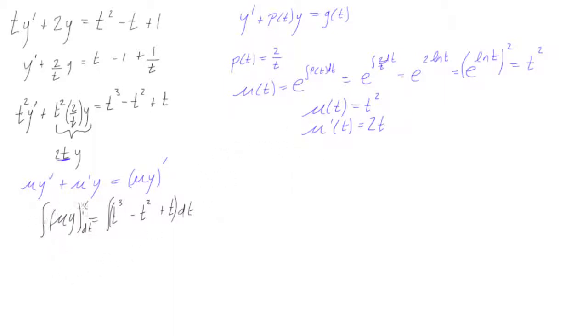Okay, so we take the integral of a derivative, and so we just remove both sides. So we get μy is equal to, well, we'll do this term by term, so we'll get 1/4 t to the power 4 minus 1/3 t cubed plus 1/2 t squared. And now I suppose we can put in this integration constant because we know it's going to end up in this place.